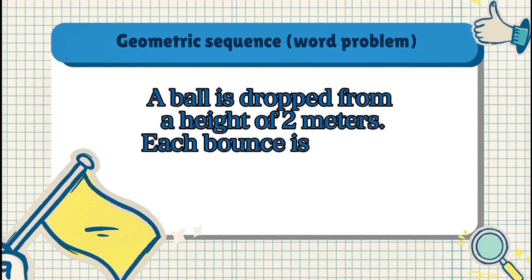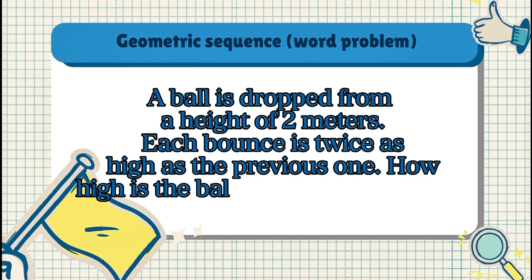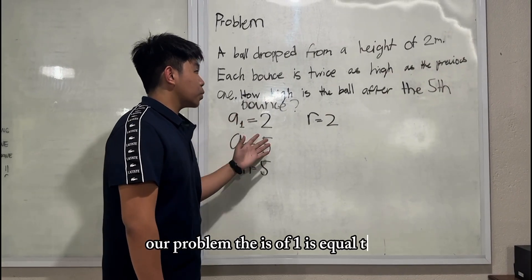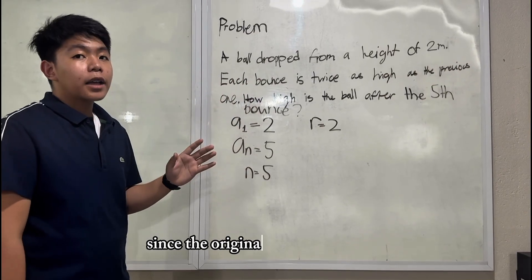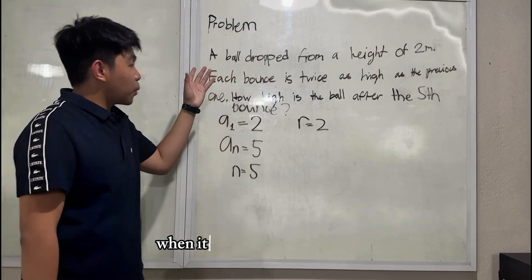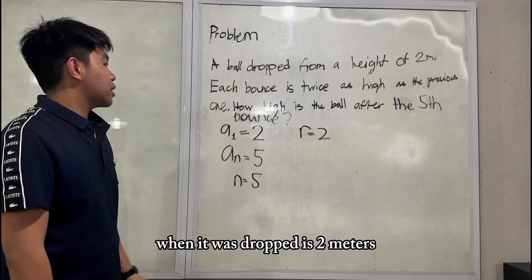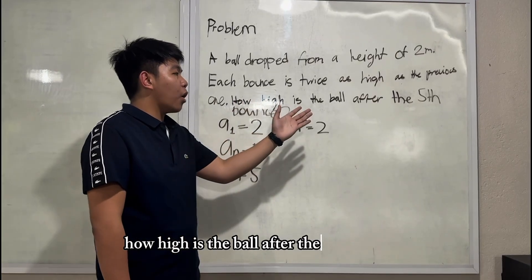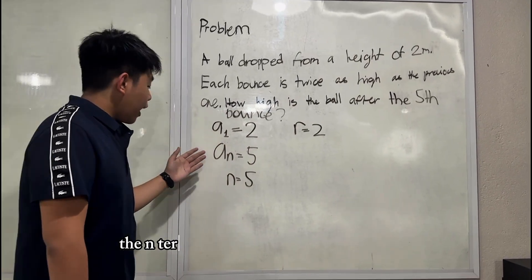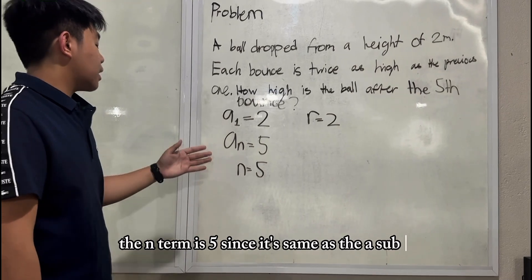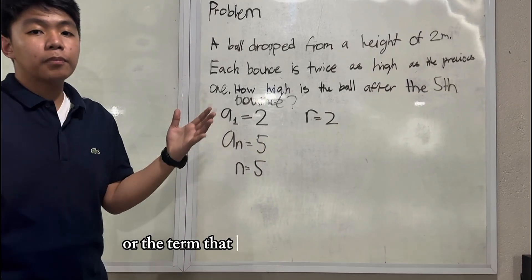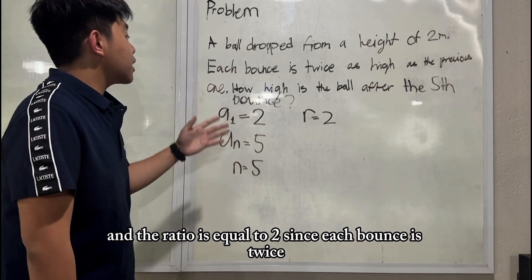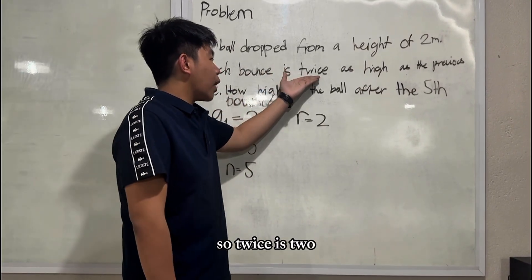A ball is dropped from a height of 2 meters. Each bounce is twice as high as the previous one. How high is the ball after the fifth bounce? The a sub 1 is equal to 2 since the original height of the ball when it was dropped is 2 meters. And the a sub n is 5 since the question is how high is the ball after the fifth bounce? The n-term is 5 since it's the same as the a sub n or the term that we are required to get. And the ratio is equal to 2 since each bounce is twice.